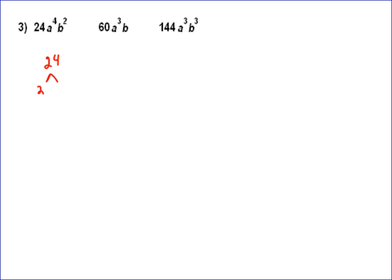So 24 is 2 times 12. 12 is 2 times 6. And then 6 is 2 times 3. So 24 is 2 cubed times 3. And then we've got to put our variables in. So a to the 4th b squared. So that's the prime factorization of 24 a to the 4th b squared.